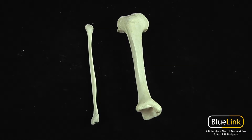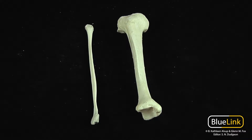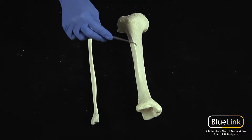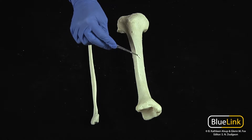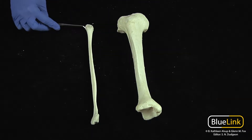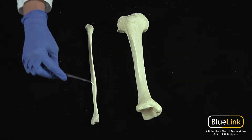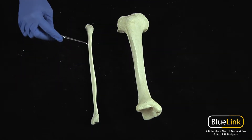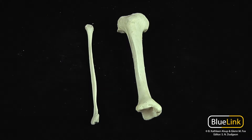We're going to be discussing the bones of the leg. You're going to have two very distinct bones. One is considerably larger than the other in terms of breadth. Then you have the more lateral, skinny fibula.